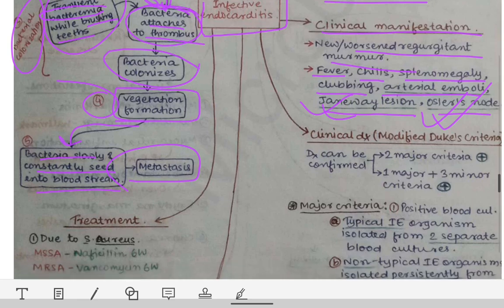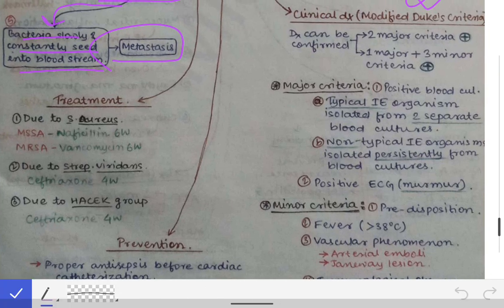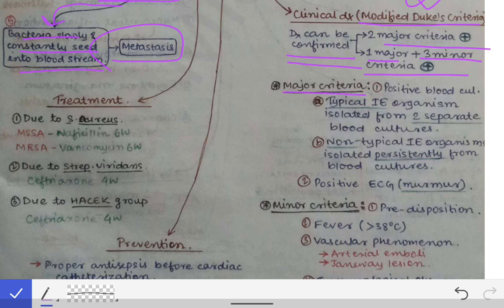Diagnosis of infective endocarditis is essentially a clinical diagnosis made by the Modified Duke's criteria. According to Duke's criteria, diagnosis is confirmed if two major criteria are present, or one major and three minor criteria are present. The major criteria include a positive blood culture — if a typical infective endocarditis organism is isolated from two separate blood cultures.